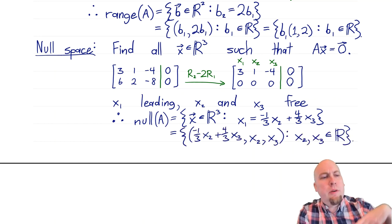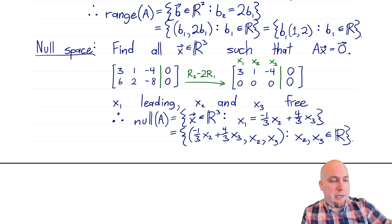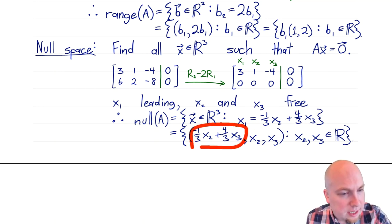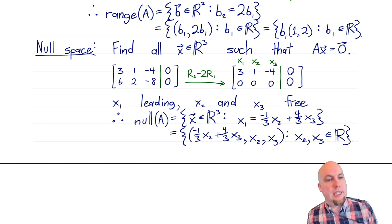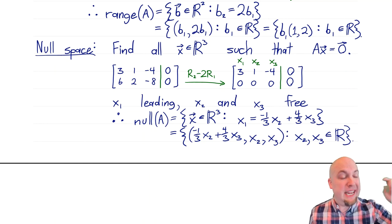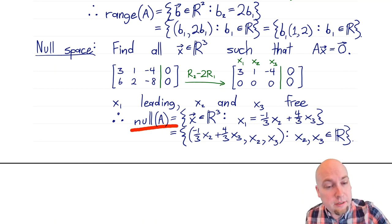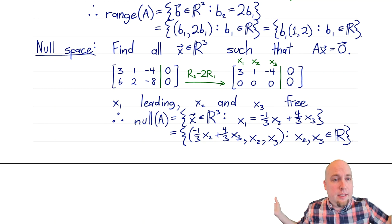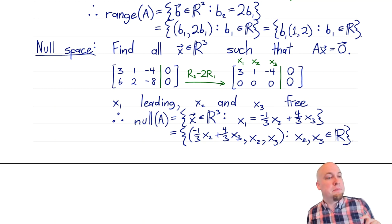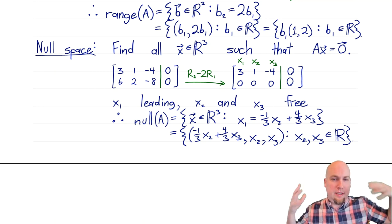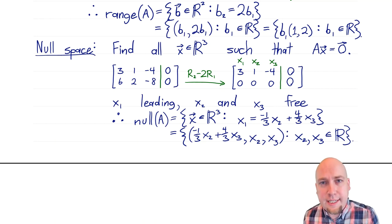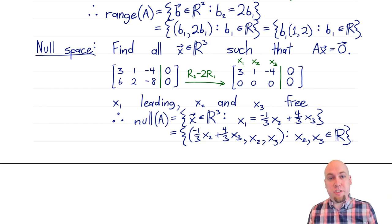With two free variables, there are two directions to move in this subspace — so the null space is a plane. It lives in three-dimensional space but it's a two-dimensional subspace, a plane through the origin. That'll do it for today's lecture. Next time we'll start talking about the span of a set of vectors, which is a new way of constructing subspaces.